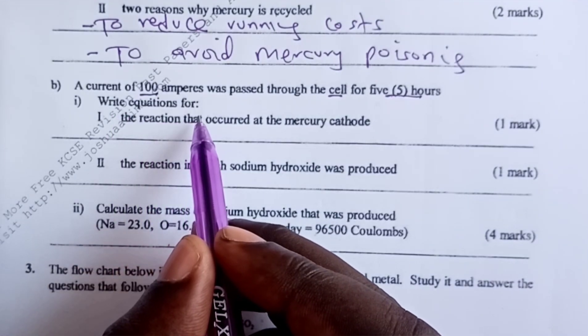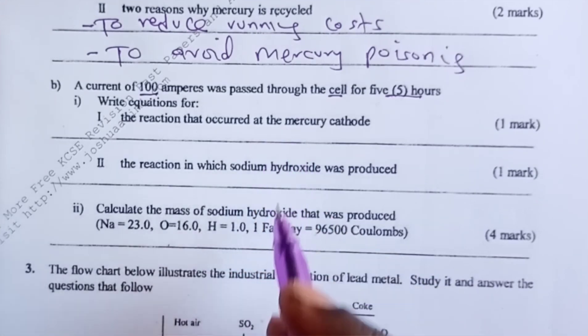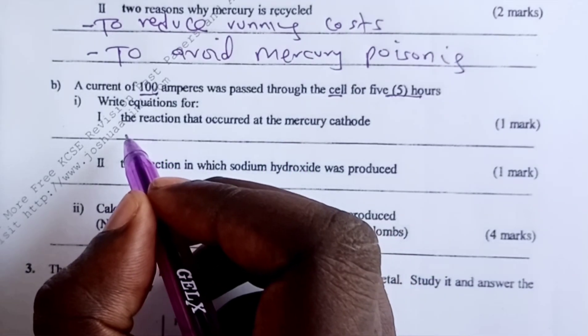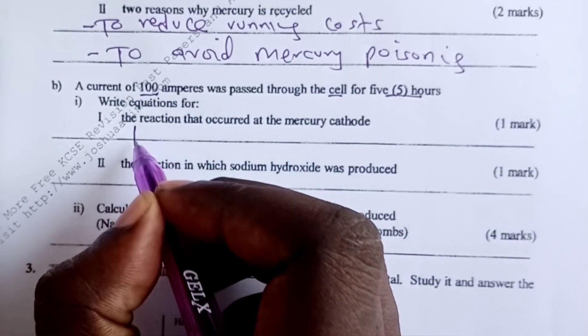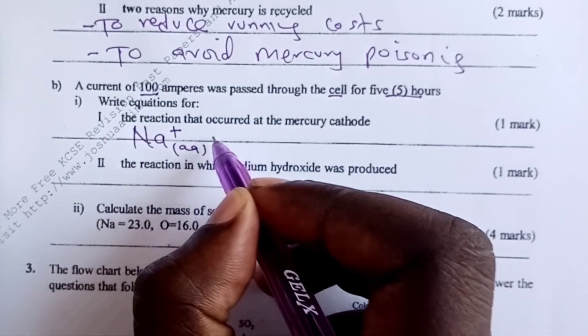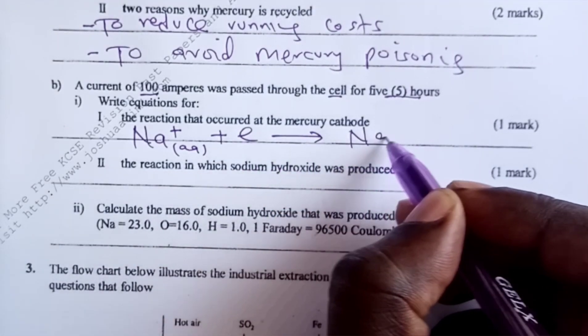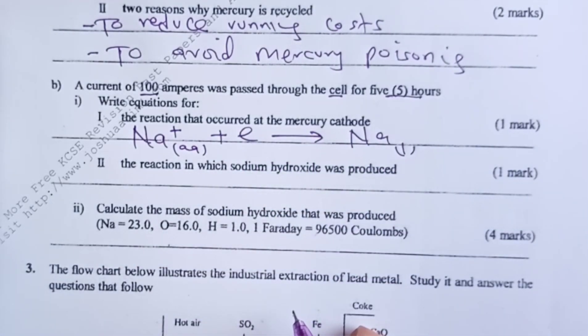Write equations for the reaction that occurred at the mercury cathode. At cathode, we have just seen a case where sodium ions are being discharged and we are able to get sodium as liquid.